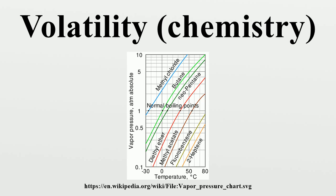The higher the vapor pressure of a liquid at a given temperature, the higher the volatility and the lower the normal boiling point of the liquid. The vapor pressure chart displays the vapor pressure's dependency for a variety of liquids as a function of temperature.